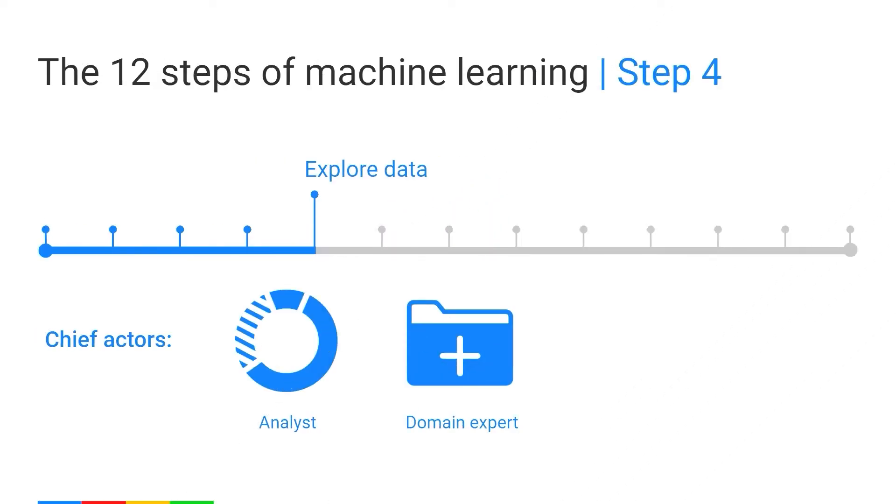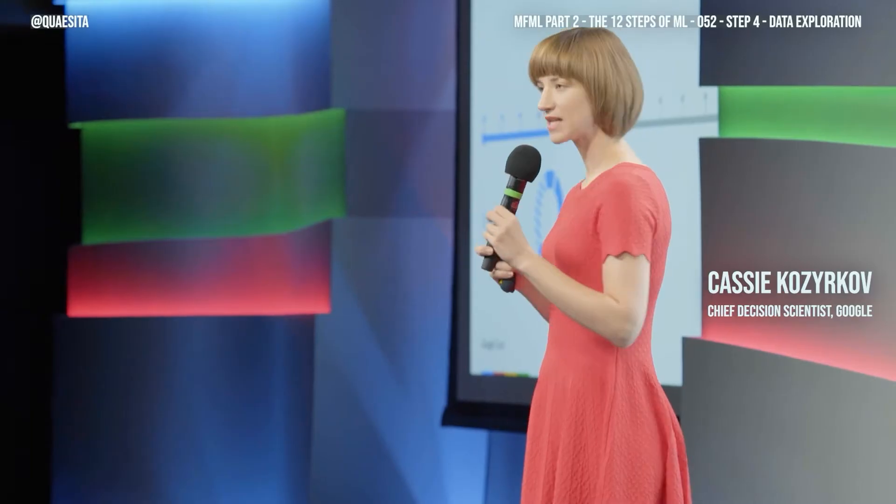Step 4: Look at some of the data. Are we going to look at all of our data? Exactly — you have gotten the point of the previous stage. Which data set will we look at? The training data only.